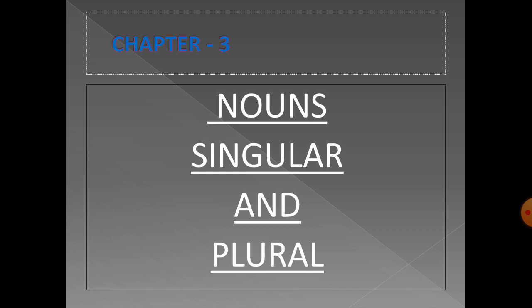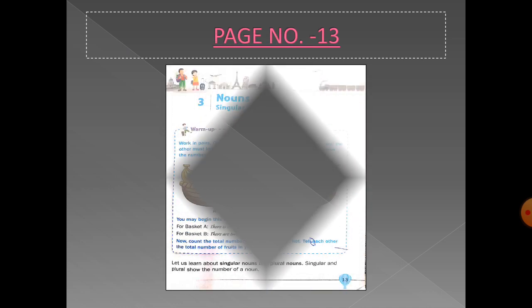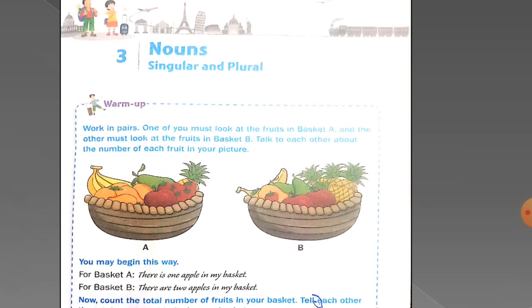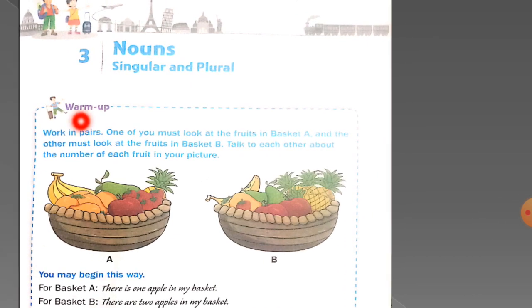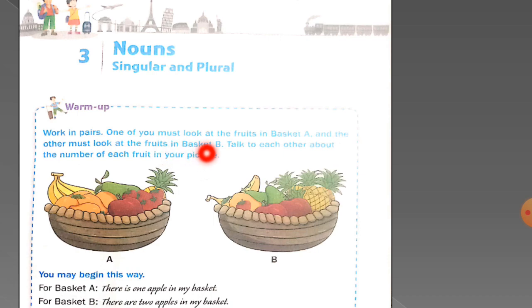I hope that you have understood this. Now please take out page number 13. Now the warm up exercise — work in pairs. One of you must look at the fruits in basket A and the other must look at the fruits in basket B. Talk to each other about the number of each fruit in your picture.